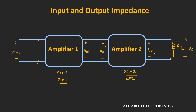Similarly, the output of the second amplifier is VO2. Depending on the output impedance of the second amplifier, the voltage VO will appear across the load. To get the maximum output voltage across the load, the output impedance of the second amplifier should be minimum. In this way, input and output impedance play a major role whenever circuits are cascaded. To avoid the loading effect, the input impedance should be as high as possible and the output impedance should be as low as possible.